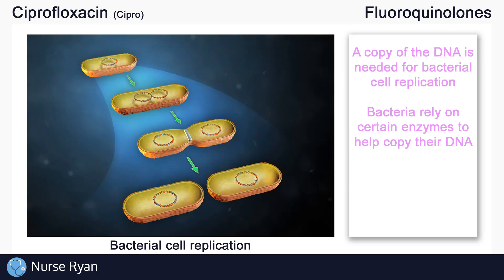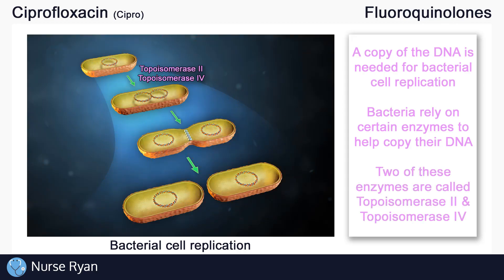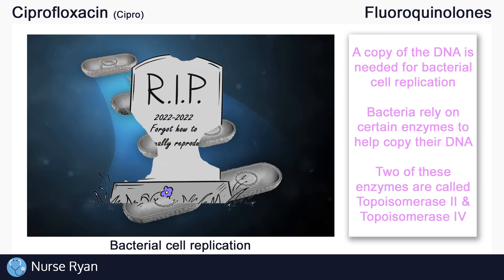Some of these very crucial enzymes are called topoisomerase 2 and topoisomerase 4. Without these two enzymes, bacterial cells would not be able to replicate, and eventually the bacteria would die off.